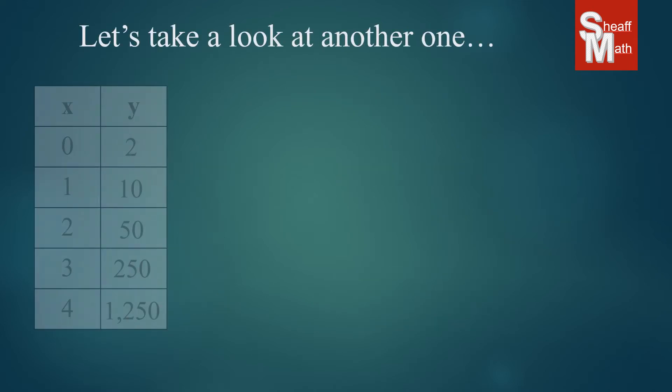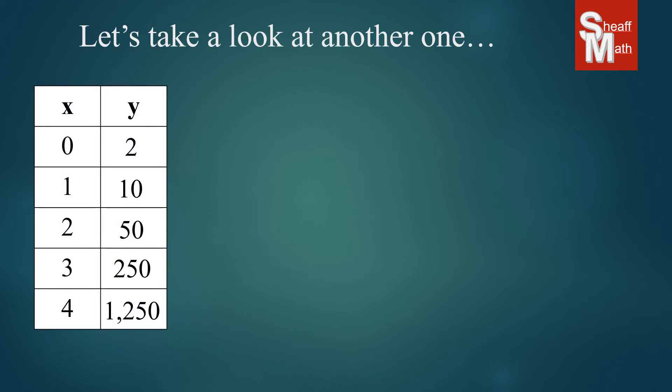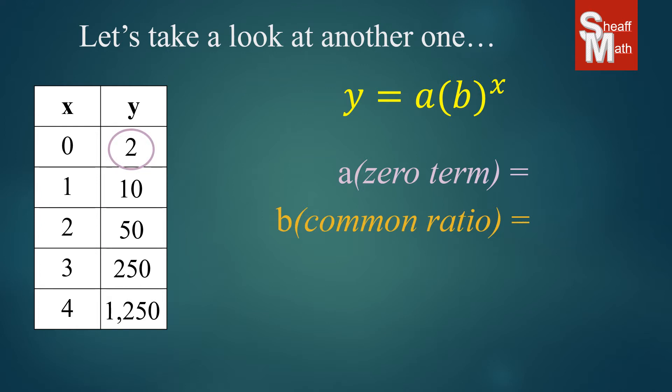Let's take a look at another one. Here we are again going to find our zero term and our common ratio. The zero term, again, is real easy to find there. Anytime you have zero in that table on the x side. And so we have that one.